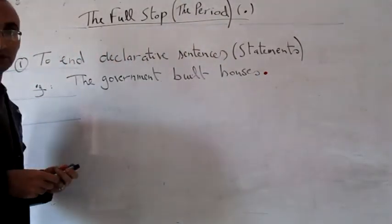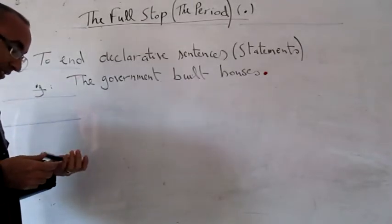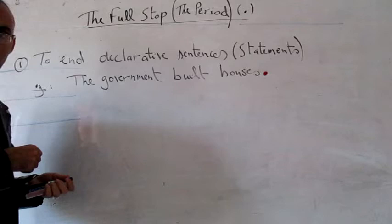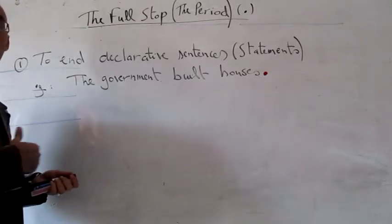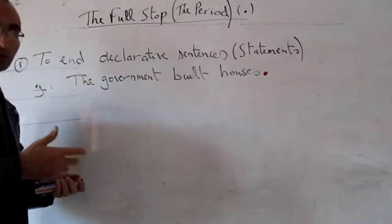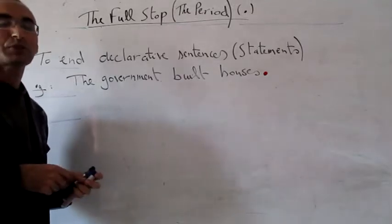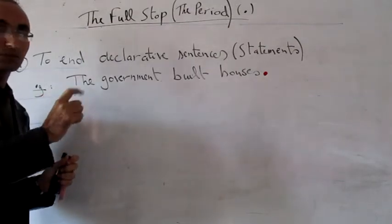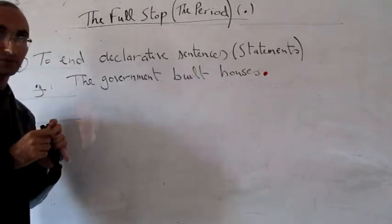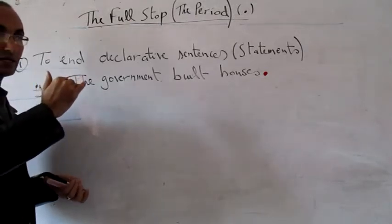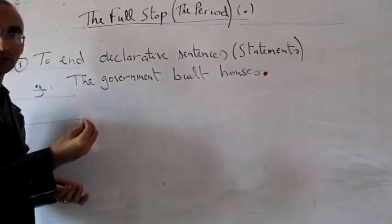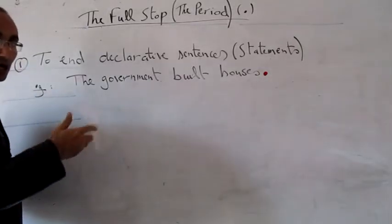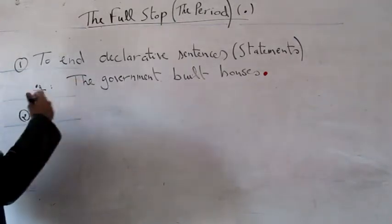Another type of sentence that ends with a full stop includes imperatives. For example: 'Stop writing,' 'Don't please look back,' 'Help me please.' These are orders or imperatives. However, we must distinguish between two types: if the imperative is very strong and emphatic, we must not end it with a full stop — that case takes an exclamation mark. But if it is only a mild, not-strong imperative, it ends with a full stop. It depends on the speaker's intention.